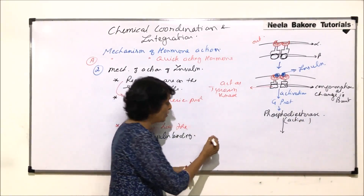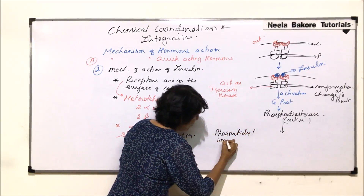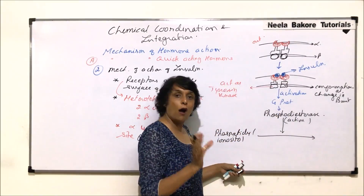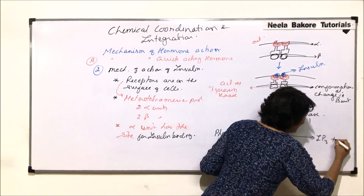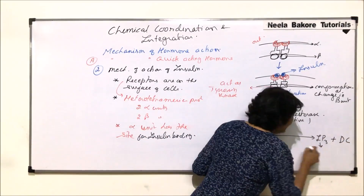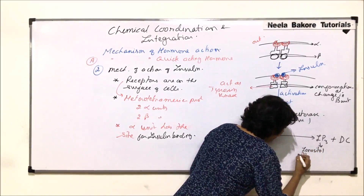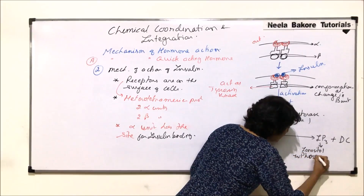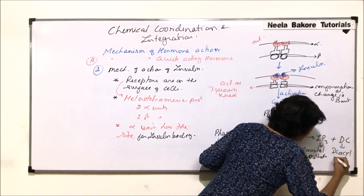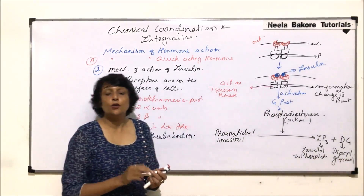Inactive phosphodiesterase is converted into active phosphodiesterase. This active phosphodiesterase helps in the conversion of phosphatidylinositol into two components: IP3, which stands for inositol triphosphate, and DAG, which stands for diacylglycerol.